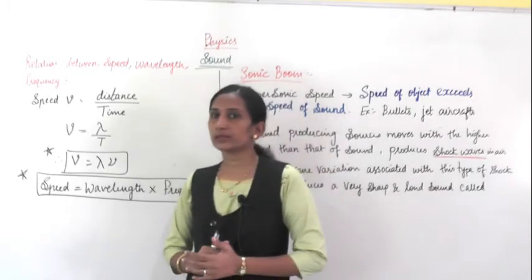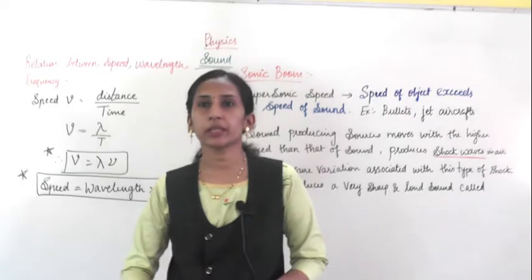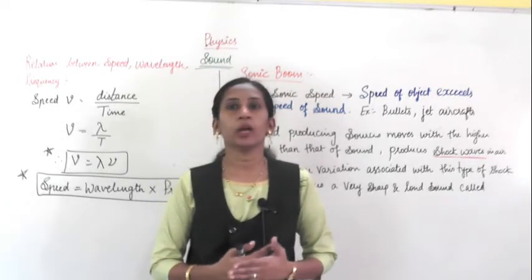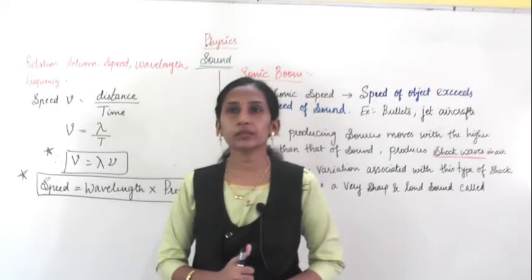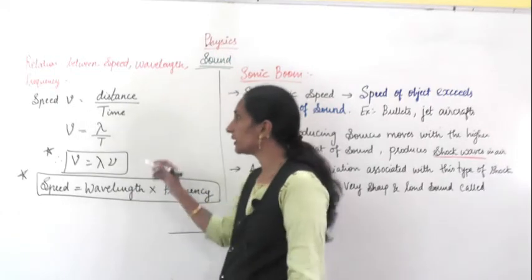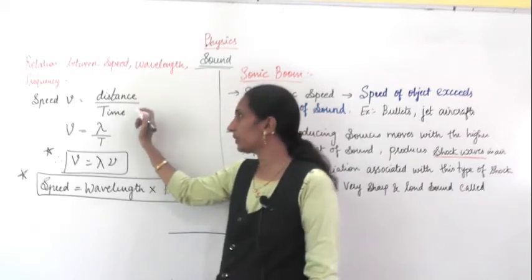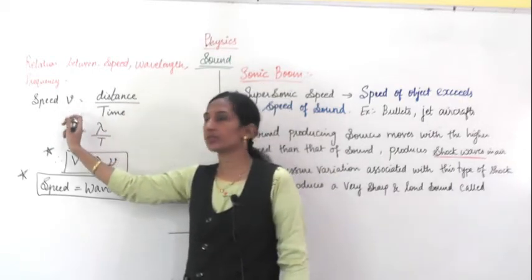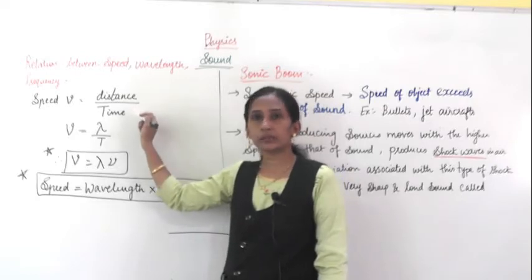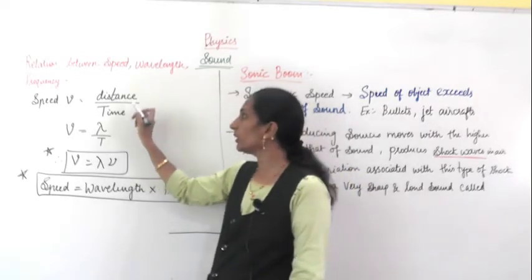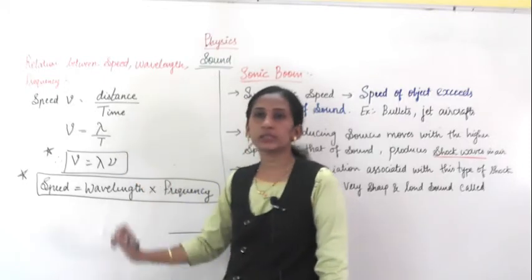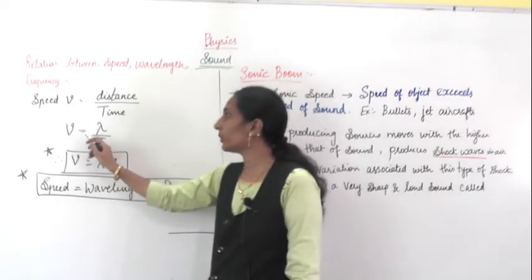As you all know, the formula for speed — if you want to find the speed of any moving object, or even sound — the formula is the same: speed equals distance upon time. In this case, the distance we are considering is the distance of the wave, which is taken as wavelength. So if you want to find the speed, denoted by small letter v, the formula is distance divided by time. But the distance in the case of a sound wave is the wavelength, whose symbol is lambda, divided by time period symbol T. So we get v equal to lambda upon T.